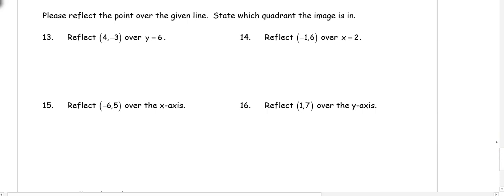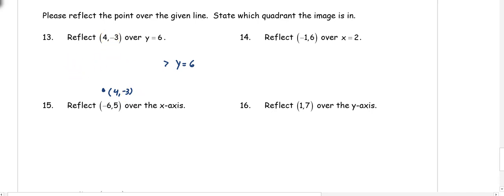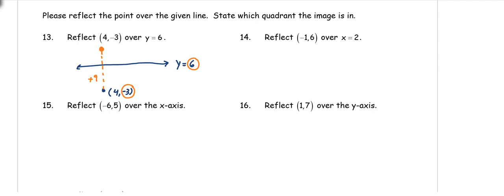Reflect the point over a given line and state which quadrant the image is in. If we have y equals 6, that's a horizontal line. Our point (4, -3) is below this line. Since it's a y line, look at the y coordinate: to get from -3 to 6 we add 9, then add another 9 to get the new point. So the new coordinate is (4, 15) — wait, adding 9 to 6 gives 15 — actually the result given is (4, 14). That point is in the first quadrant.